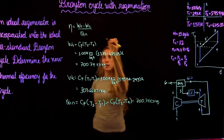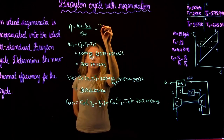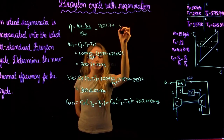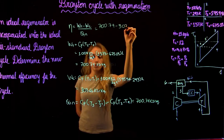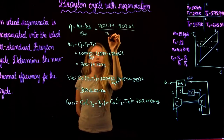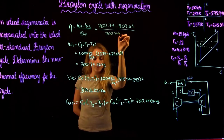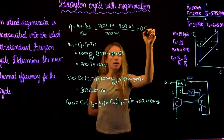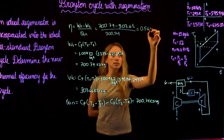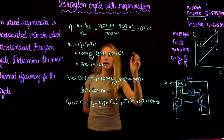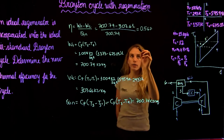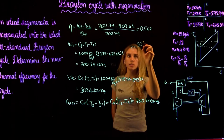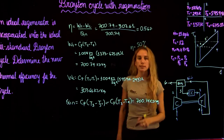Now we plug in the numbers: η = (774 − 303.61) / 774, which gives us a thermal efficiency of 56.7%. We see that previously we found around 50%, so by adding the regenerator we improved efficiency by about 6%.